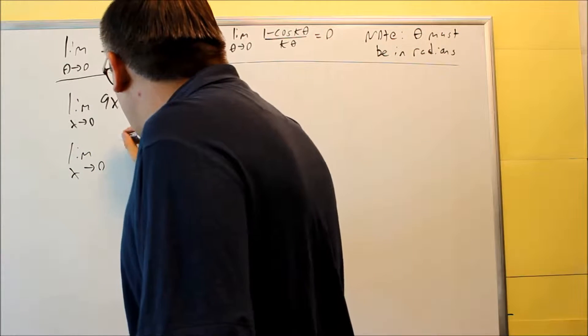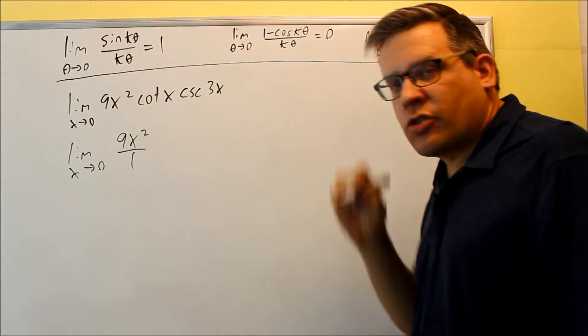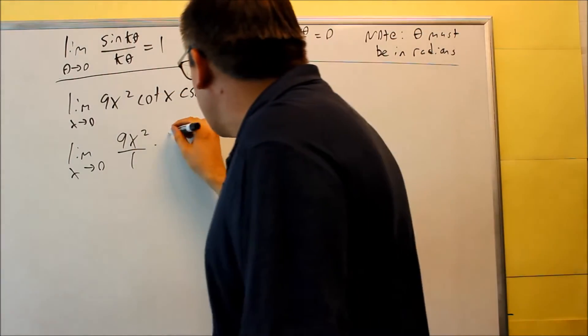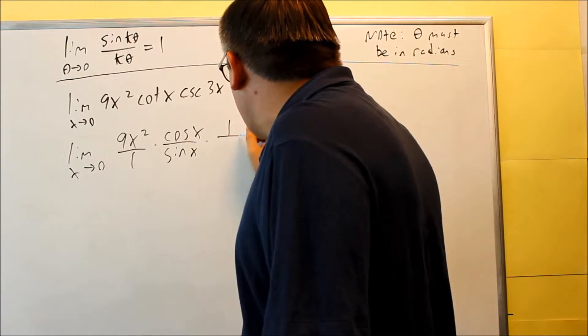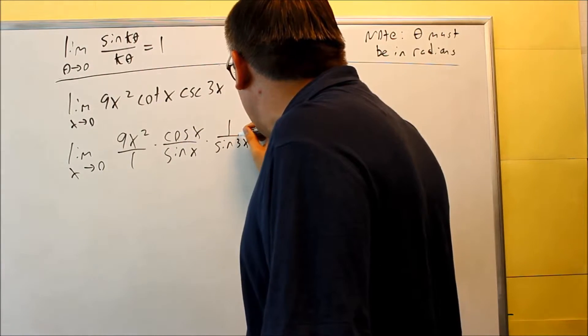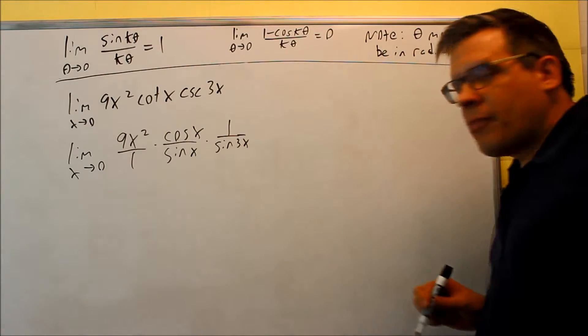Okay so for here I'm going to write the 9x squared as a fraction just to make it easier because the other ones are going to turn into fractions also. Cotangent I'm going to write as cosine of x over sine x. And then cosecant is going to be 1 over sine of 3x. Okay so now I have my three fractions.